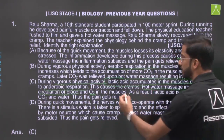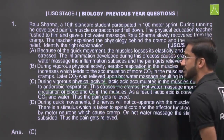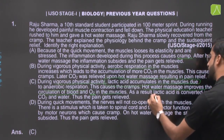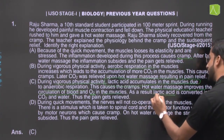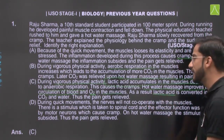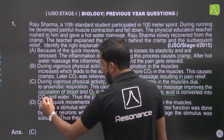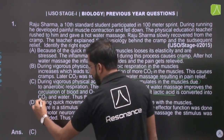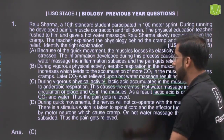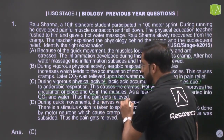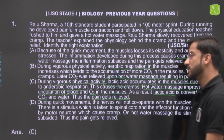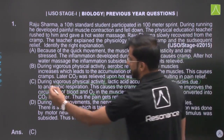As oxygen levels increase, the muscles receive oxygen and lactic acid begins to break down, converting to CO2 and water. Finally, the pain gets relieved. This means Option C is the correct answer.